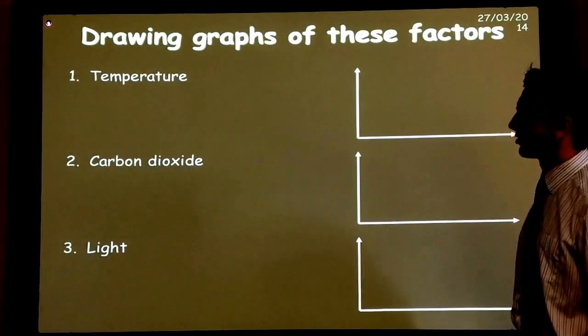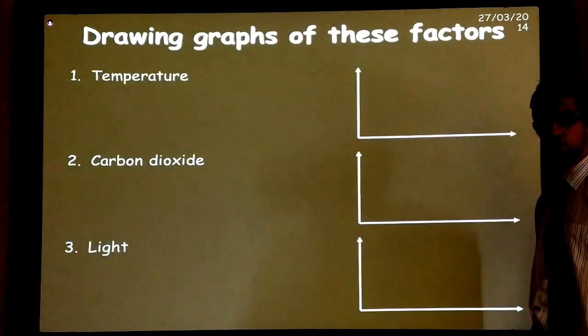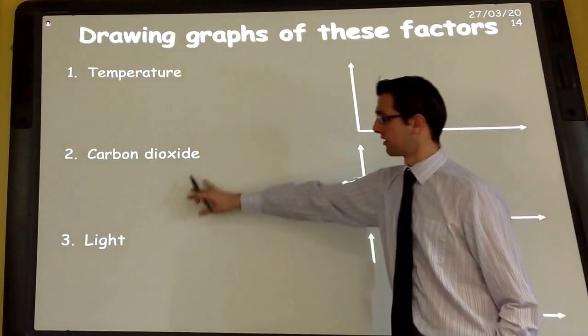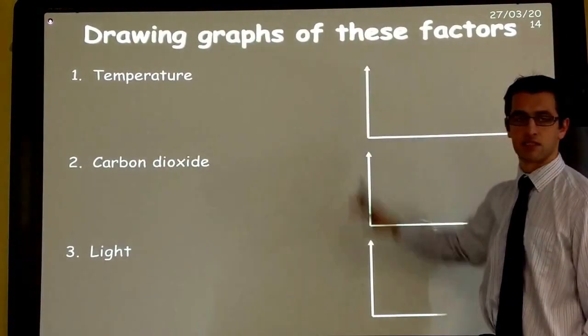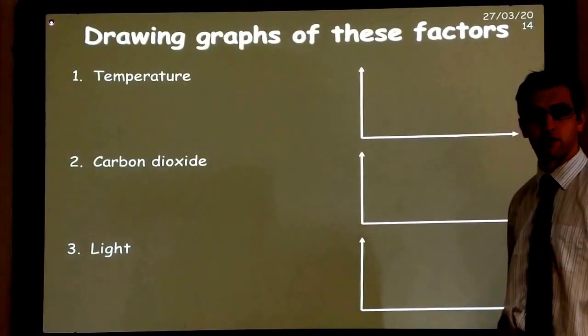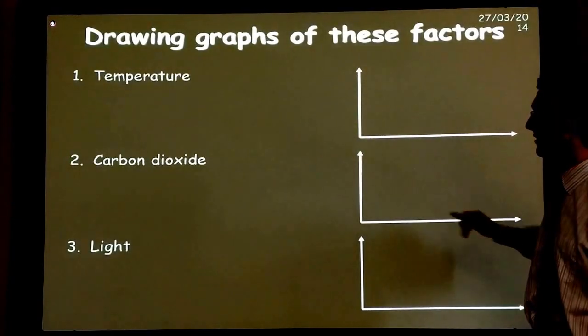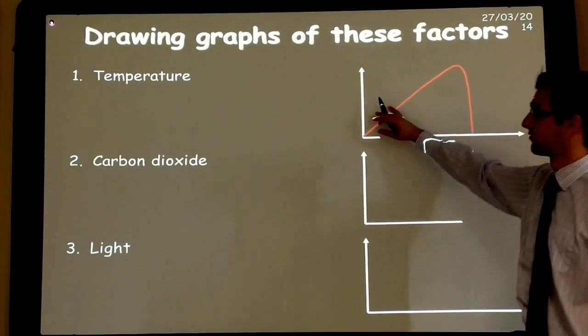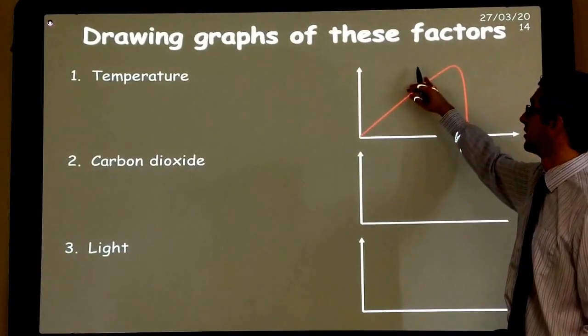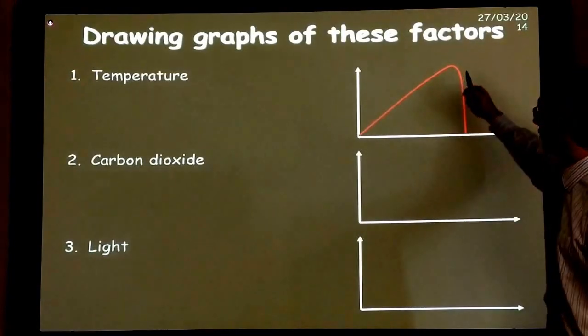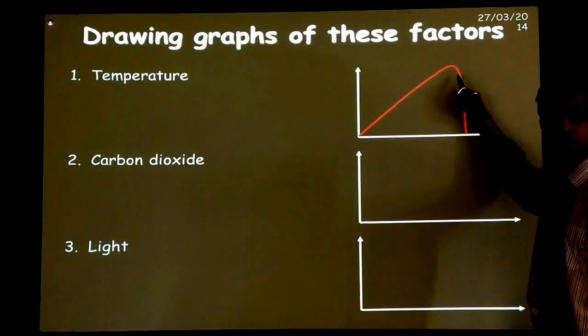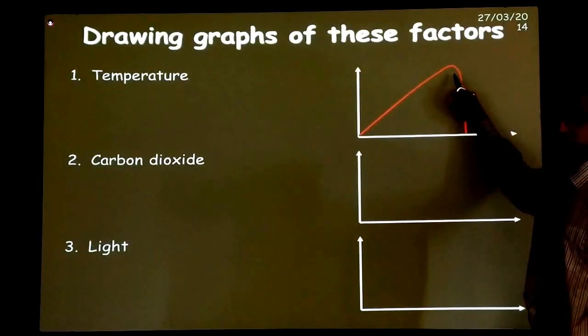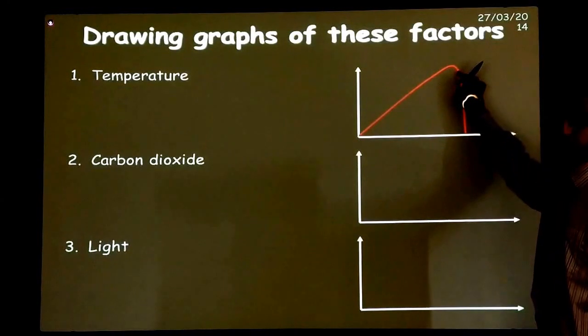So to look at the effect of each of these in turn, along the bottom axis here is going to be each of these variables in turn and up the y axis here is the rate of photosynthesis. So if we take temperature to start with, as you increase temperature initially, so the rate of photosynthesis is also going to increase. But we also know that when we reach an optimum temperature of around 30 to 40 degrees C, that we are going to reach our maximum rate.